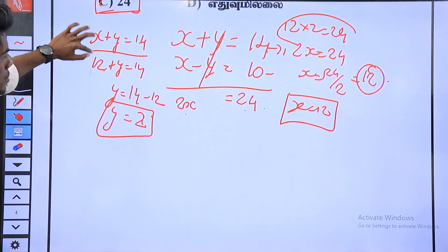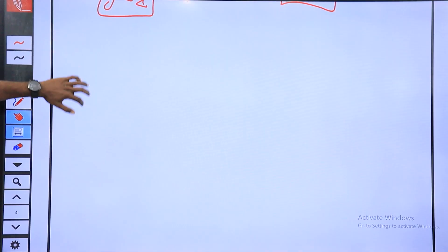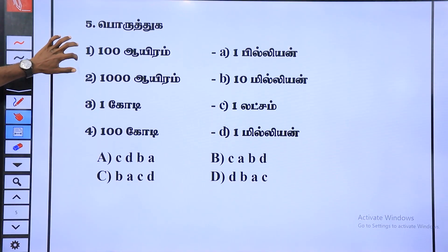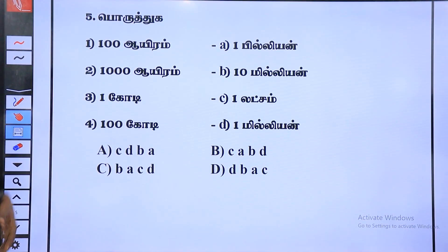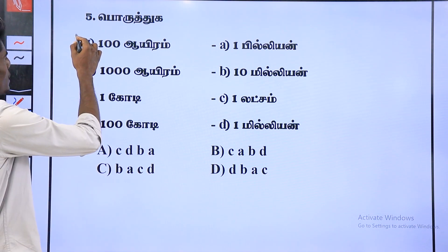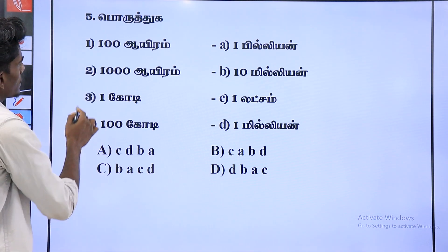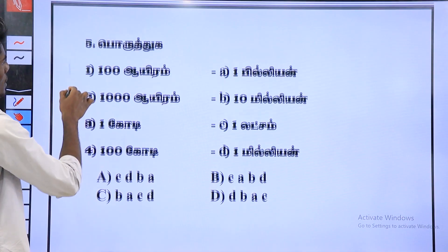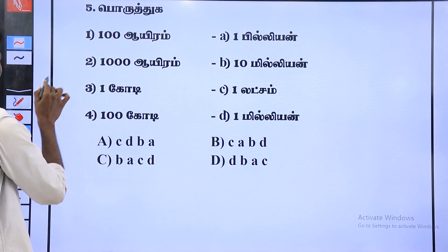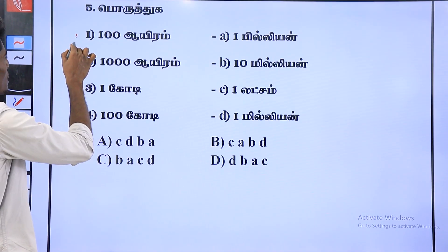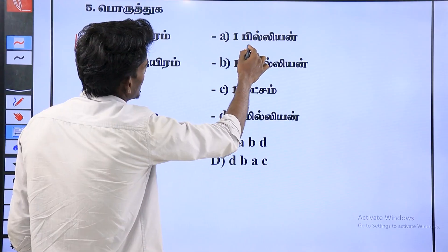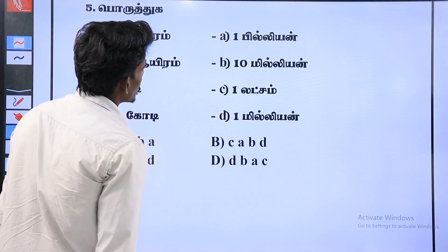Okay, the next question is number 5 — Indian standards. We use the number of Indian standards. The other one is international standards. That means million and billion.